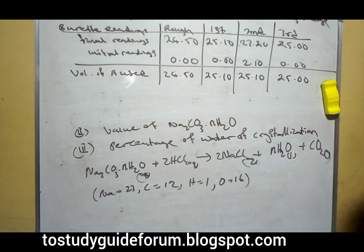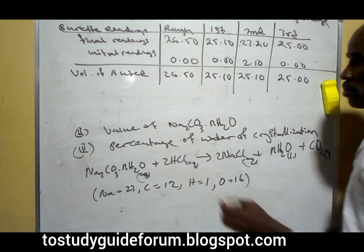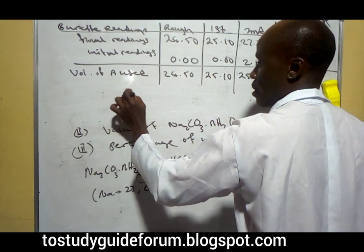With the titration information we are going to use it to solve the question given to us. This is the table of the analysis, so we're going to calculate the average volume.